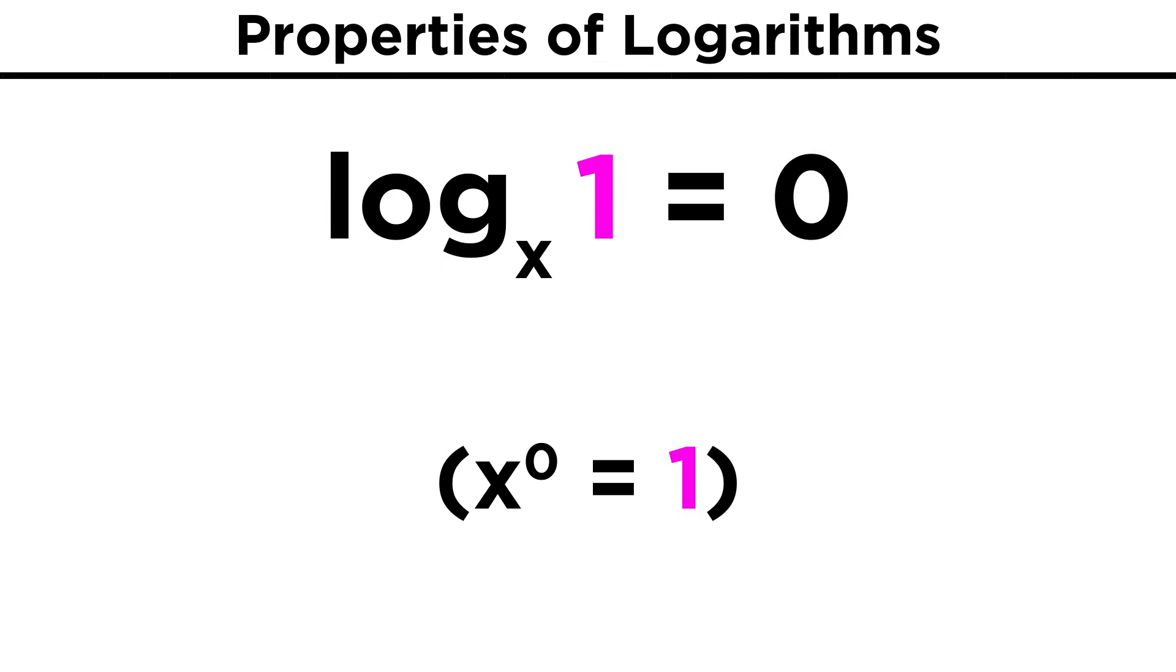If instead we are taking the log of one, this will always be zero, regardless of the base, because any base must be raised to the zero power to get one.